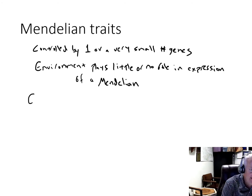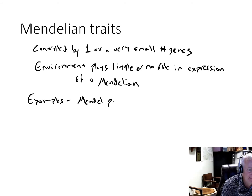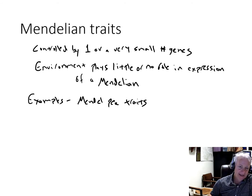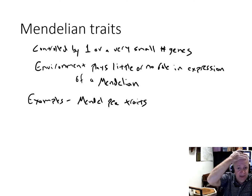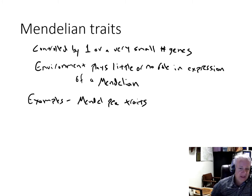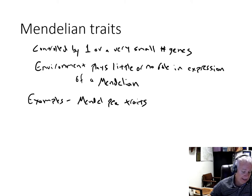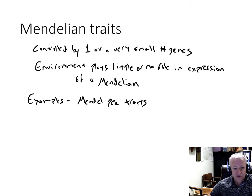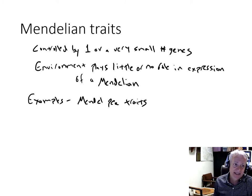Some examples of Mendelian traits include all of the Mendel pea traits — wrinkled peas and some colors. Eye color in humans, whether you have a widow's peak — that's a Mendelian trait. Diseases like sickle cell anemia or hemophilia are Mendelian. In trees, there are a few traits that have been identified as Mendelian — probably primarily disease resistance traits.